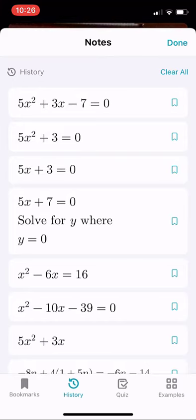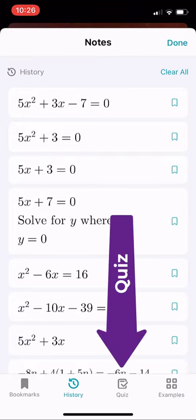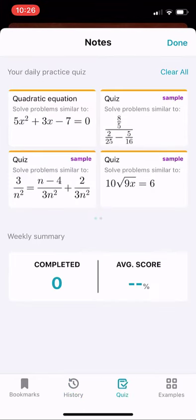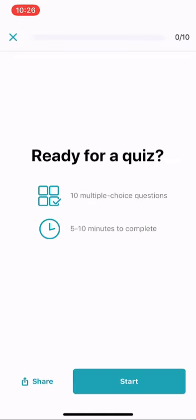Now down at the bottom there's this new quiz option. It just showed up. I'm going to click quiz. Now I have a choice. You can see my equation 5x squared plus 3x minus 7 equals 0. I'm going to click that and it's generating a practice quiz.